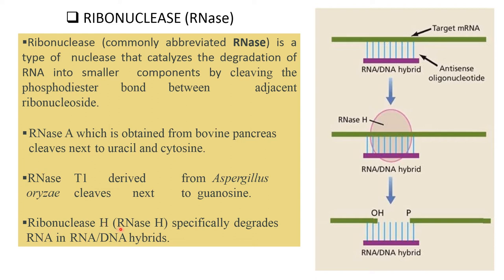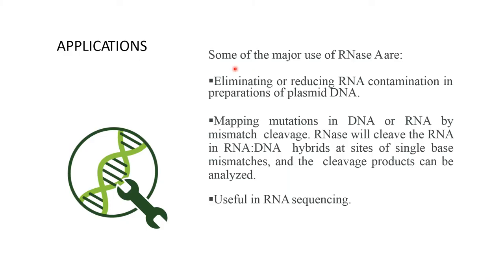Ribonuclease H (RNase H) specifically degrades RNA in an RNA-DNA hybrid. Some of the major uses of RNase A are: eliminating or reducing RNA contamination in preparations of plasmid DNA, and mapping mutations in DNA or RNA by mismatch cleavage. RNase will cleave the RNA in an RNA-DNA hybrid at the site of a single base mismatch, and the cleavage products can be analyzed — this is useful in RNA sequencing.